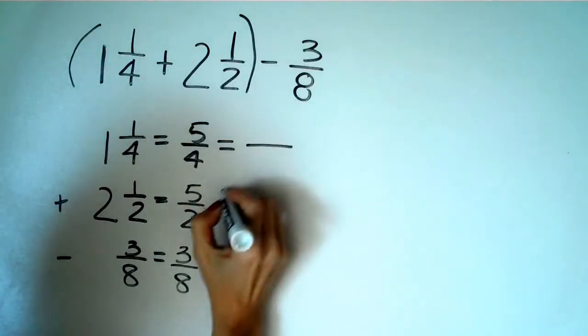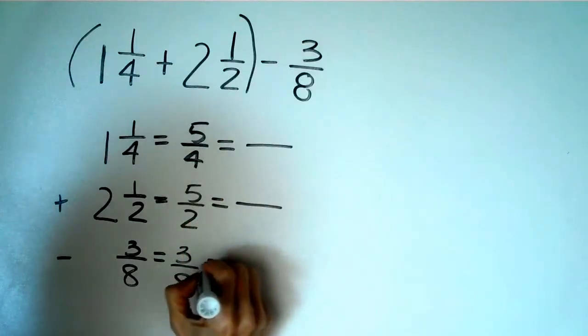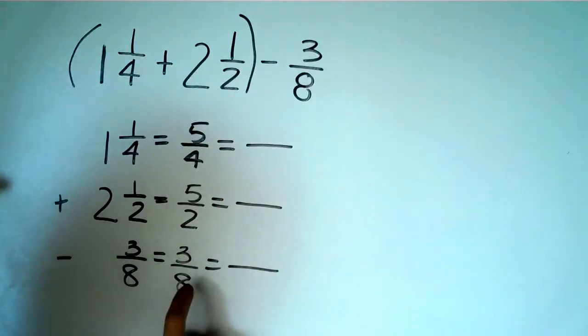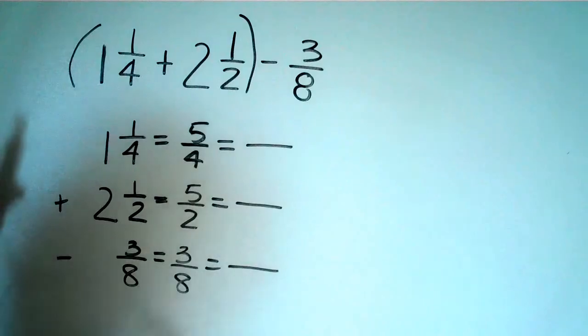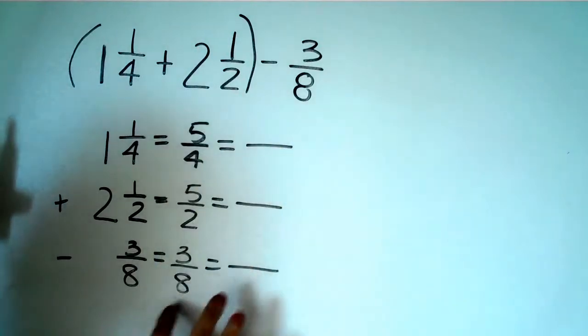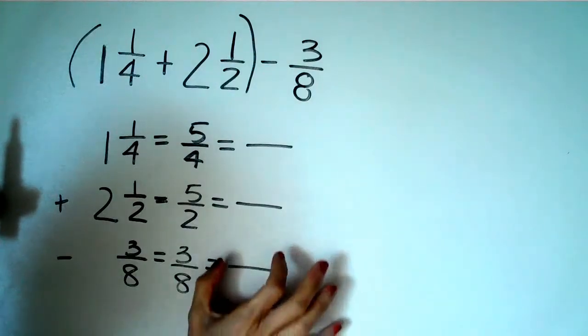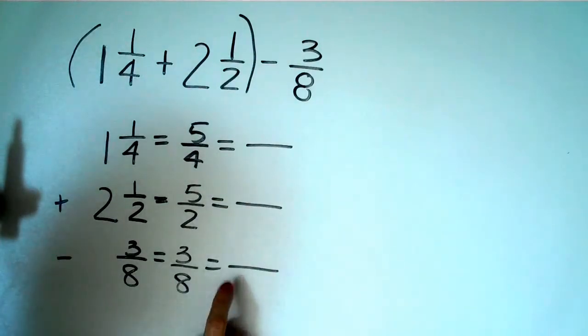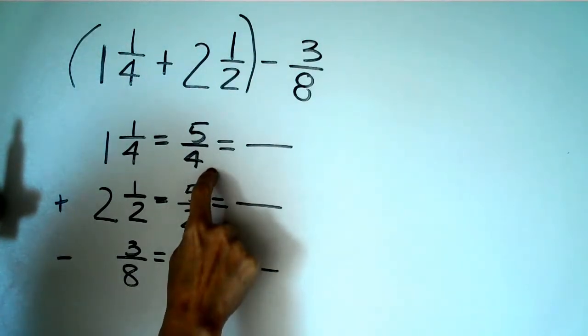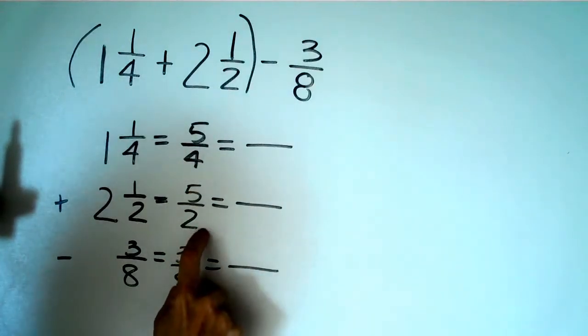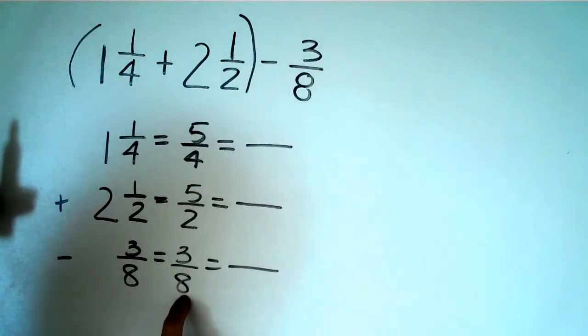So now what we have to do is we have to change them into equivalent fractions because I have different denominators. So I'm going to make all of these fractions here into equivalent fractions with the same denominator. And I know two fits into four and four fits into eight. In fact, the multiples of two are two, four, six, eight.